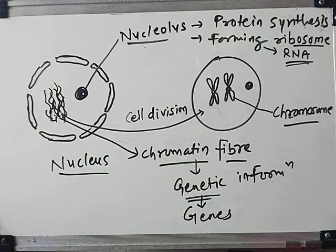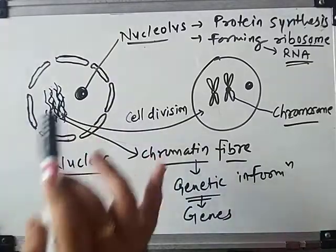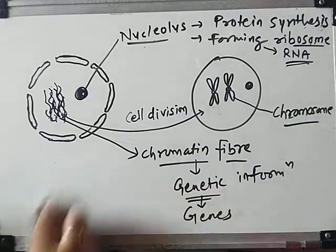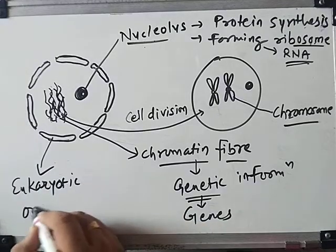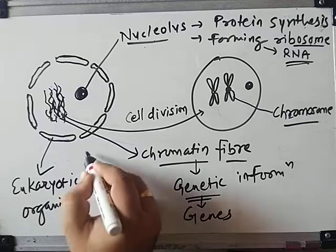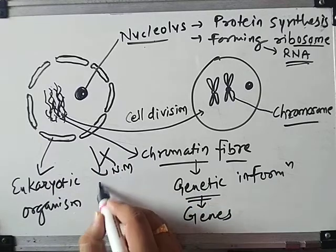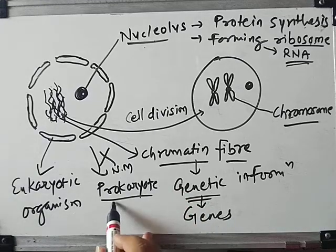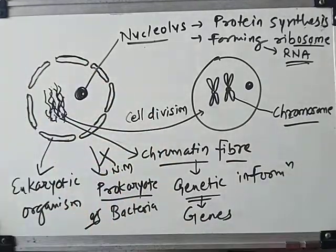Sometimes particular cells do not have a nuclear membrane. Most cells do have a nuclear membrane — those having a nuclear membrane are called eukaryotes or eukaryotic organisms. Without a nuclear membrane, it is called a prokaryote or prokaryotic organism. The best example of a prokaryote is bacteria — in bacteria, there is no nuclear membrane, and the whole genetic material and nucleolus just roam freely in the cytoplasm.